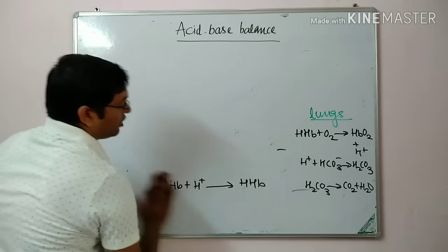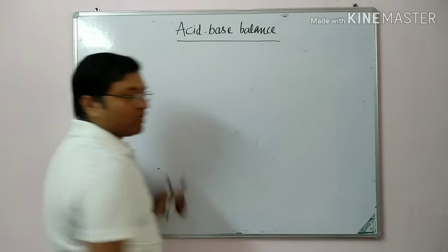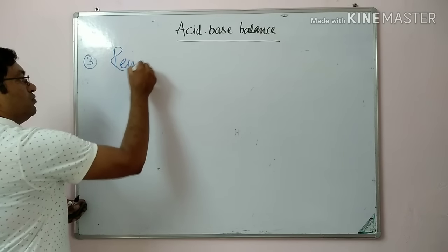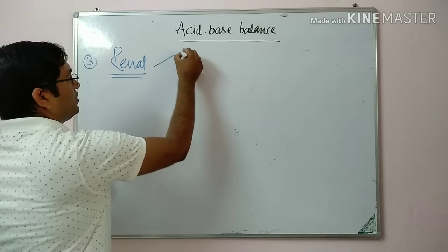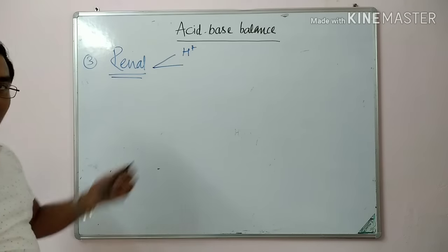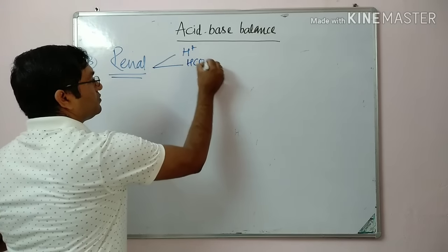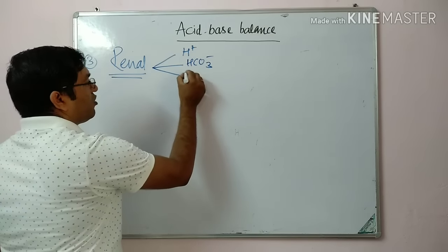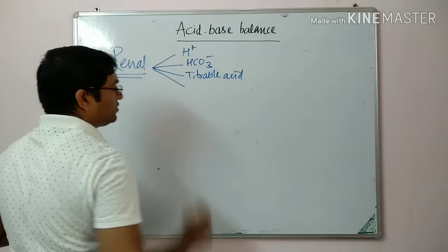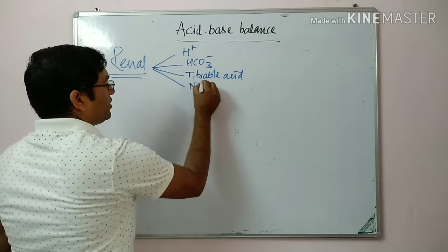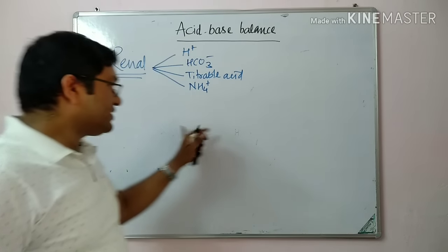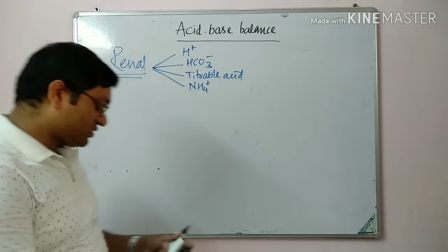The third and permanent mechanism — the third line of defense — is the kidney or renal system. The renal mechanism acts by four mechanisms: first, excretion of H⁺ ions; second, reclamation or reabsorption of bicarbonate; third, excretion of titratable acids; and fourth, excretion of ammonium ions.